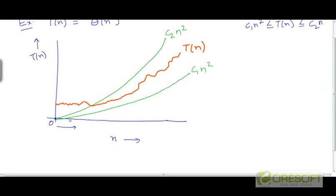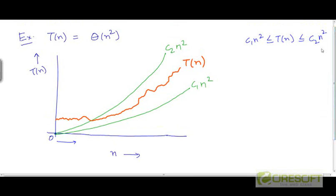Well, the first condition still holds, but the second condition doesn't hold. T is not less than or equal to c2n² for small values of n. But you can see that once we cross this point over here, let me call it n0, once n is larger than n0, the red curve is always going to lie from then on between these two green curves.